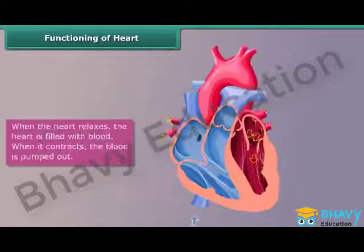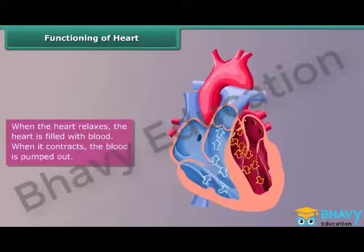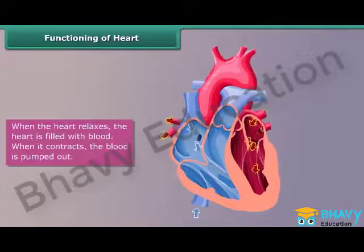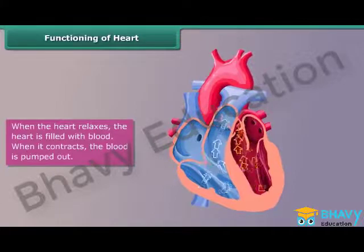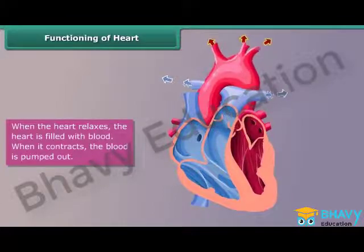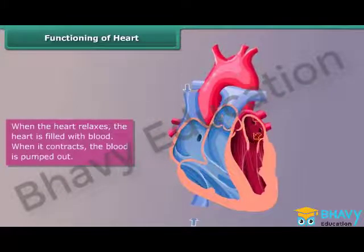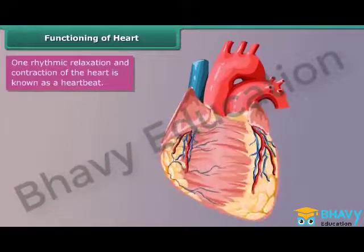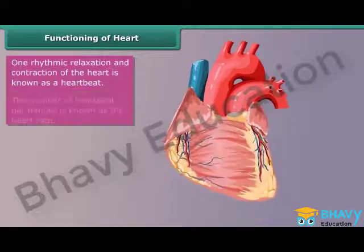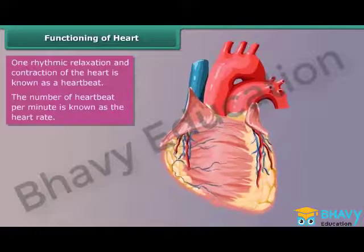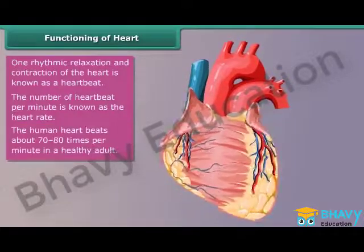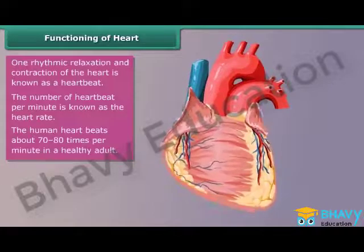The heart pumps blood through a rhythmic pattern of relaxation and contraction. When the heart relaxes, it is filled with blood; when it contracts, blood is pumped out. One rhythmic relaxation and contraction of the heart is known as a heartbeat. The number of heartbeats per minute is known as the heart rate. The human heart beats about 70 to 80 times per minute in a healthy adult.